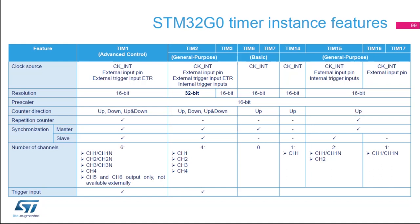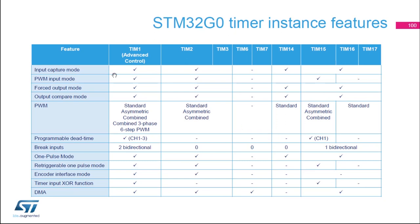We have multiple timers on the STM32G0. There are advanced timers like Timer 1, general purpose timers like Timers 2, 3, 14, 15, 16, and 17, and basic ones like Timers 6 and 7. For this lab we are going to use Timer 2, and we'll use Timer 1 Channel 2 as a PWM output. Timer 1 is considered advanced because it has a large number of channels, and Channels 1, 2, and 3 have complementary outputs, which can be used for motor control.